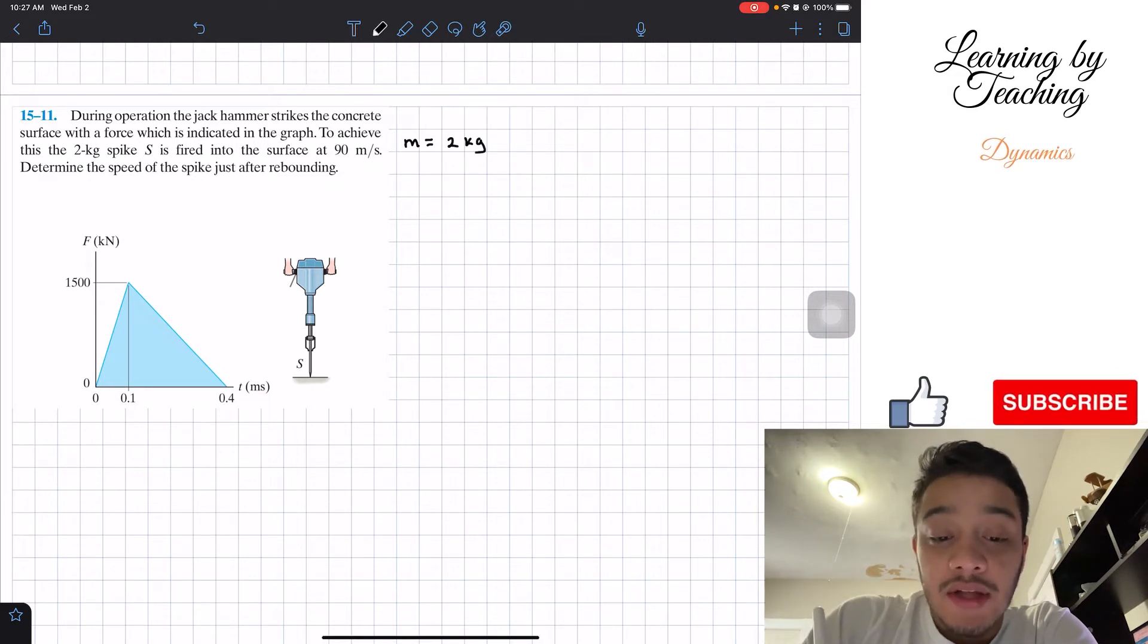I'm also being told that it's fired into the surface at a velocity of 90 meters per second. I'm going to call this one our initial, since we want to determine the velocity or the speed right after the rebounding. Also another thing to note about this velocity is that it's going into the surface, meaning that it's going down.